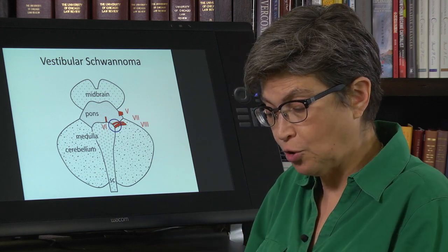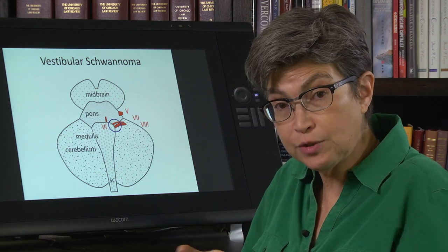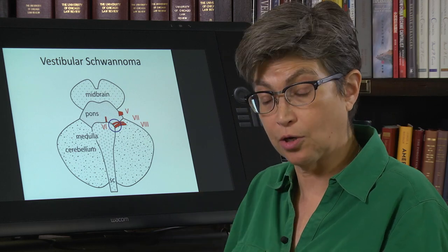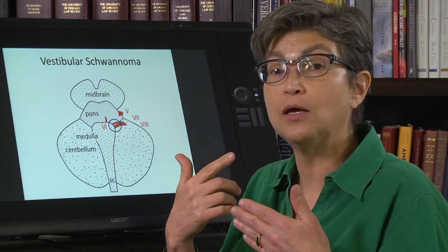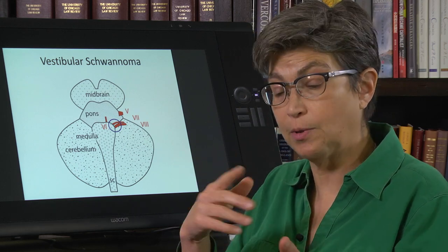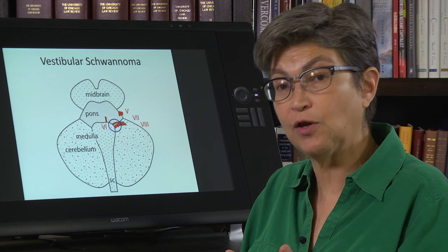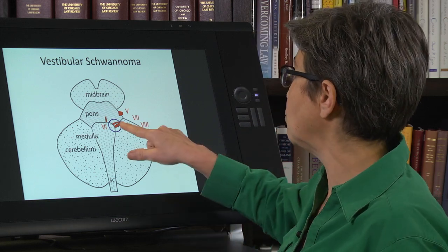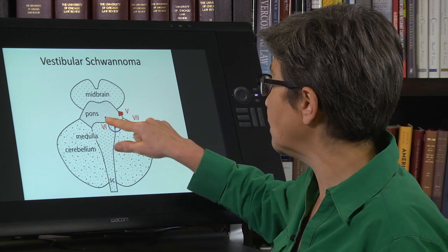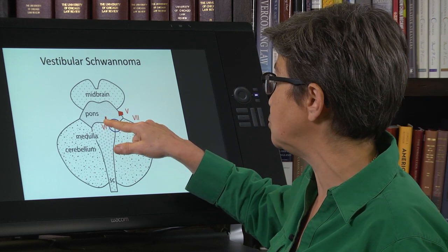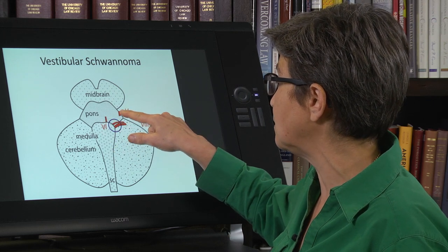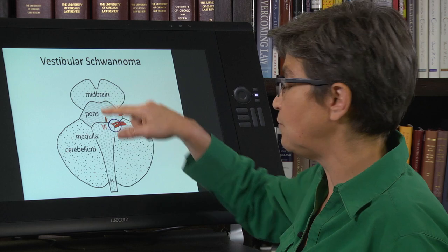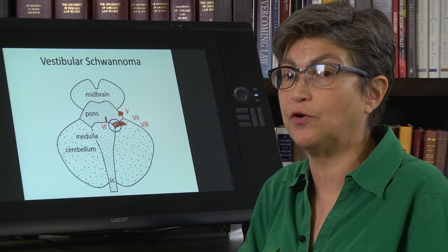If the schwannoma grows, the next symptoms are going to be hearing-related: loss of hearing and tinnitus. If it grows even more, it can reach the abducens, the trigeminal, and may even reach the glossopharyngeal nerve.